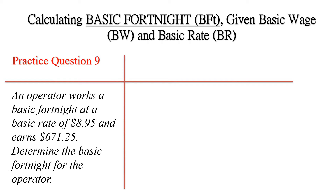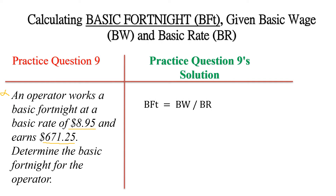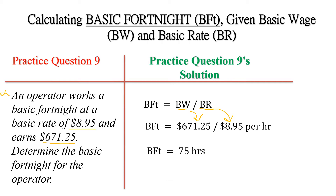Here we have another practice question involving an operator. An operator works a basic fortnight at a basic rate of $8.95 and earns $671.25. Determine the basic fortnight. The basic fortnight would be the basic wage divided by the basic rate: $671.25 divided by $8.95, giving a basic fortnight of 75 hours.